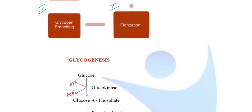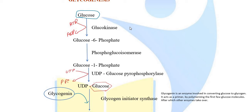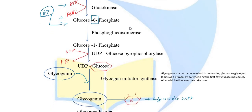In glycogenesis, individual glucose units are assembled into a macromolecule. In the initial step, glucose gets converted to glucose-6-phosphate. A phosphate group is added at the sixth position. ATP is consumed and ADP is released, forming glucose-6-phosphate.